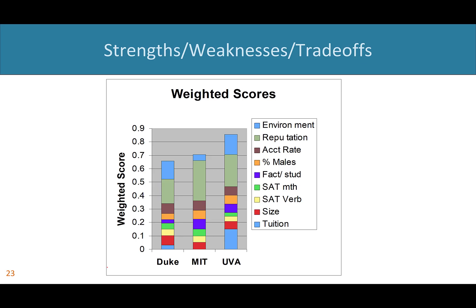Here's a plot showing weighted scores broken down by attribute for each school. Between MIT and UVA it looks pretty similar, with one big exception: the tuition block. MIT's tuition contribution is very small, while UVA's low tuition gives it a big weighted score there — that's largely the difference between the two. MIT's reputation bar is bigger than UVA's, but it's not quite as drastic as that tuition difference.